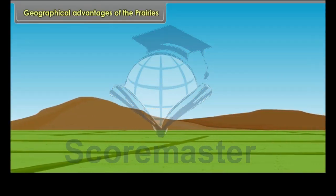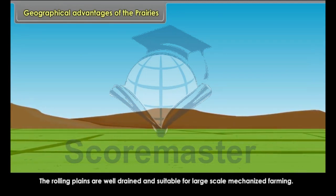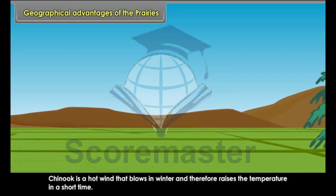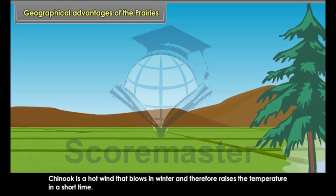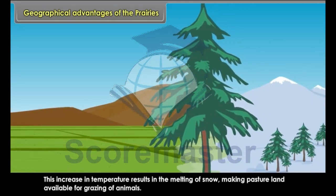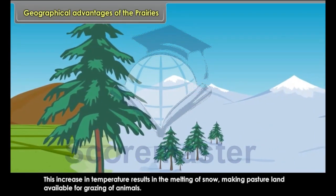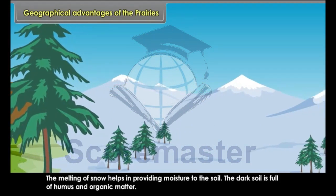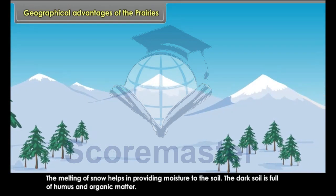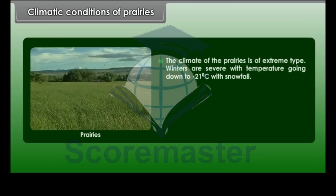The rolling plains are well-drained and suitable for large-scale mechanized farming. Chinook is a hot wind that blows in winter and raises the temperature in a short time. This increase in temperature results in the melting of snow, making pasture land available for grazing of animals. The melting of snow also helps in providing moisture to the soil.